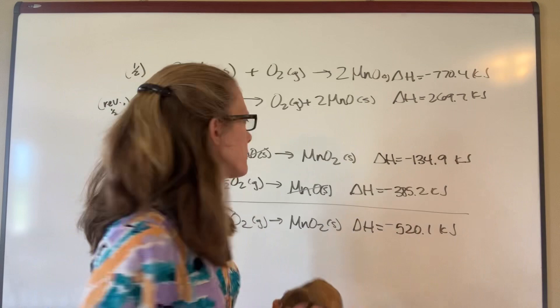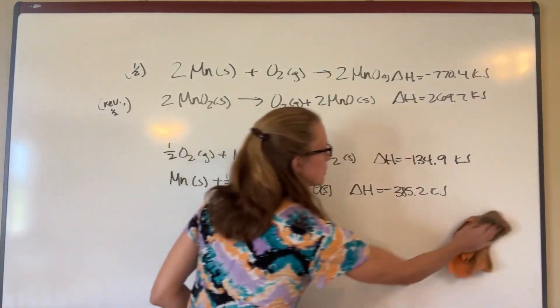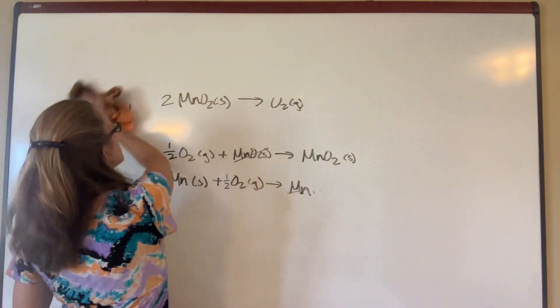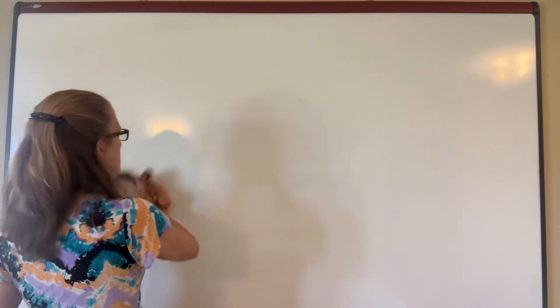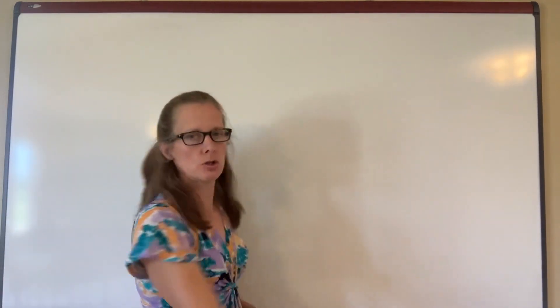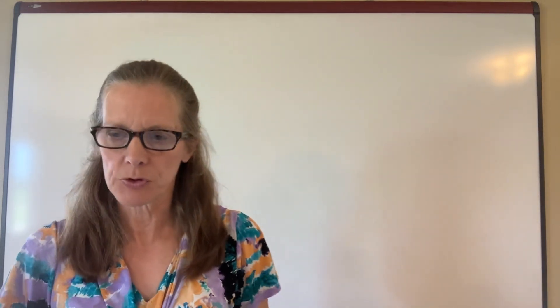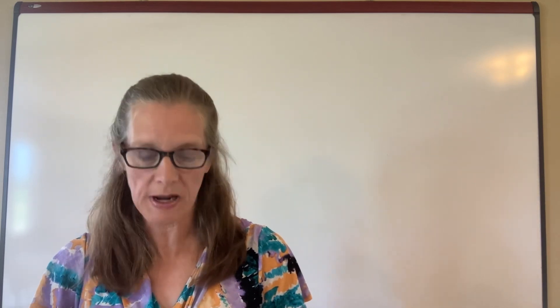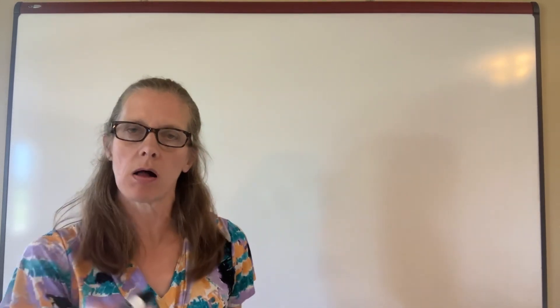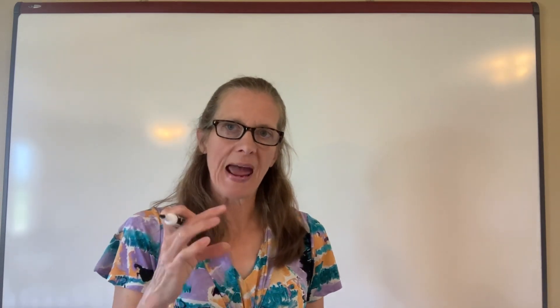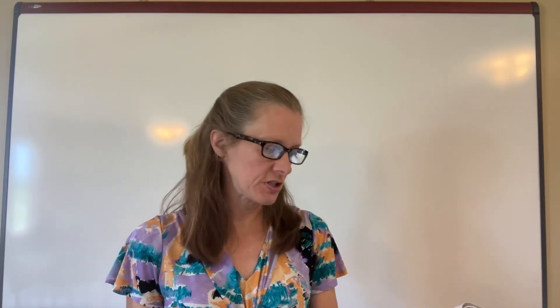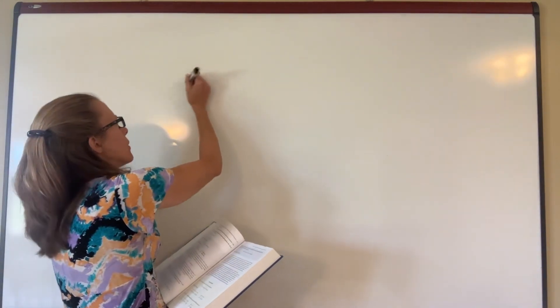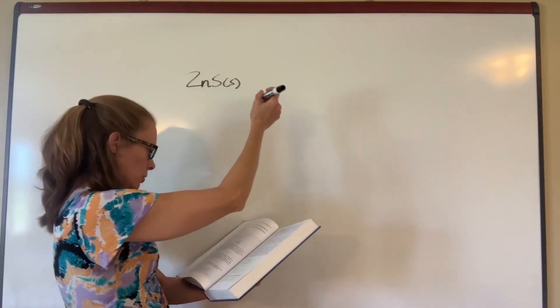The other problem is example 1.7. You might want to cover the answer and try to work it on your own first. Again, we are looking for a formation reaction, which means I'm going to take all of the individual elements and get them to add together to form a specific product. I'm starting out with two equations, and I'm looking for the formation reaction for zinc sulfate — meaning zinc plus sulfur plus oxygen on the left-hand side to yield zinc sulfate on the right-hand side.